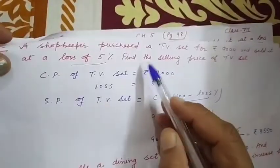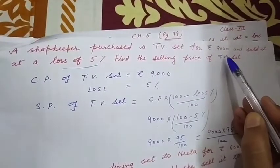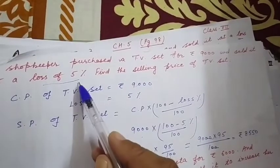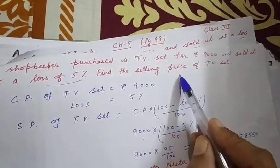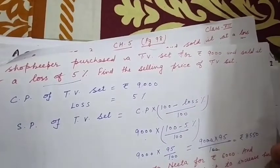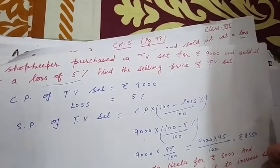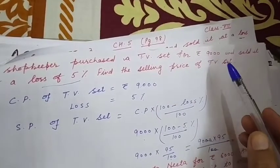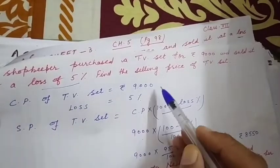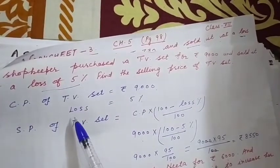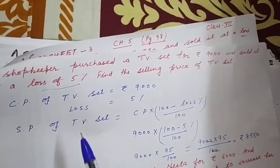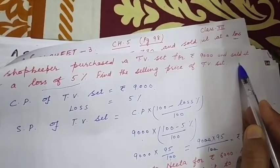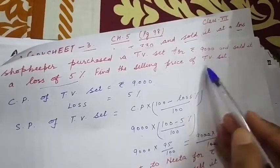Question number 3: A shopkeeper purchased a TV set for rupees 9,000 and sold it at a loss of 5%. Find the selling price of the TV set. Cost price = ₹9,000 और loss = 5%।